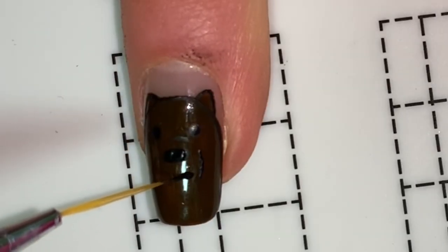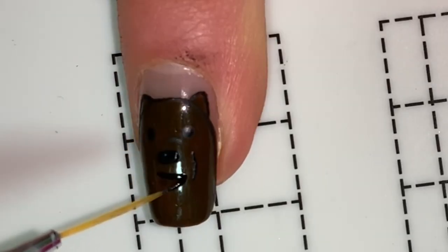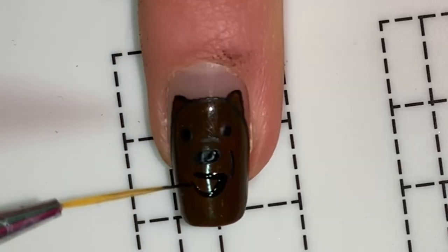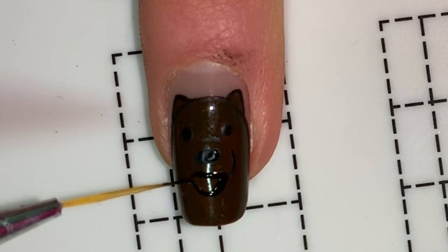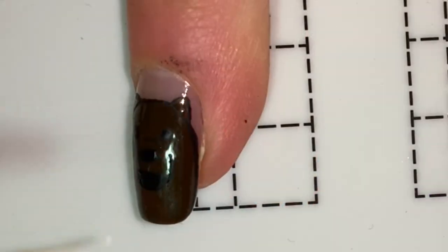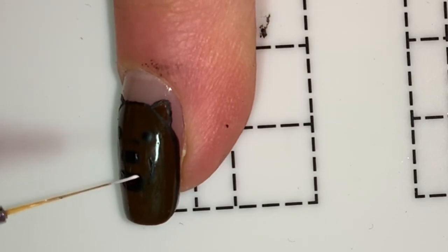Finally, for the mouth, I'm going to start off with a black half-circle shape.